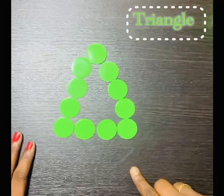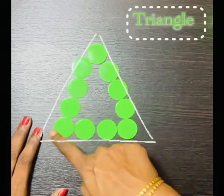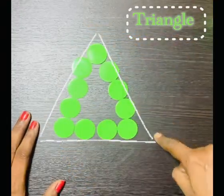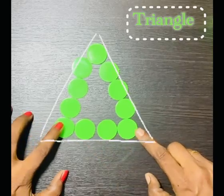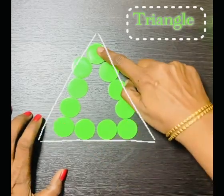It's a triangle. It has three sides: 1, 2, 3, and three corners: 1, 2, and 3.